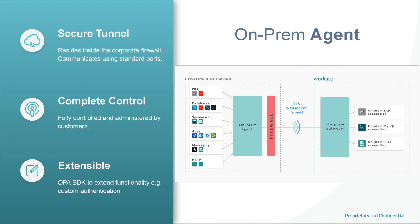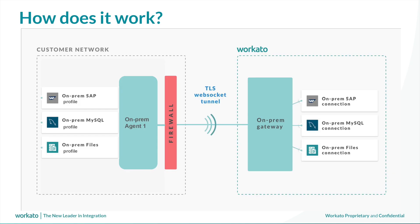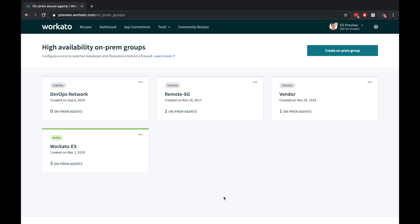You can use Recato's on-premise agent to securely connect to any number of on-premise systems. The on-premise agent provides a secure way for Recato to selectively access customer-authorized on-premise apps without having to open ports on the corporate firewall. This significantly reduces the surface area and risk of security attacks, making your InfoSec teams happy.